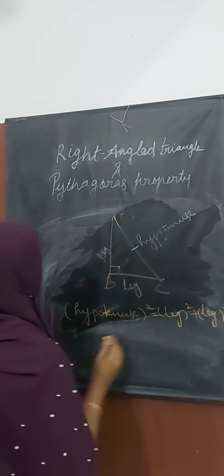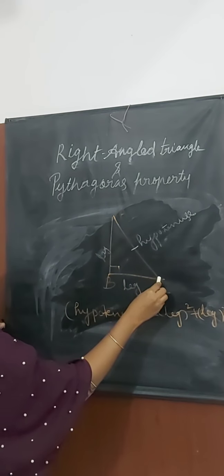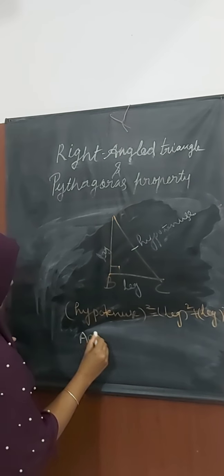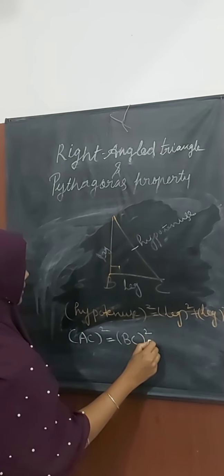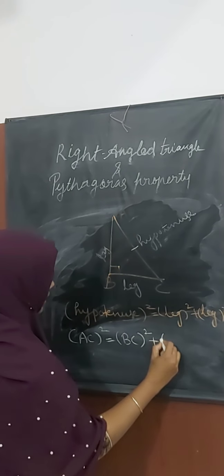That means, look at this figure. AC square equals BC square plus AB square.